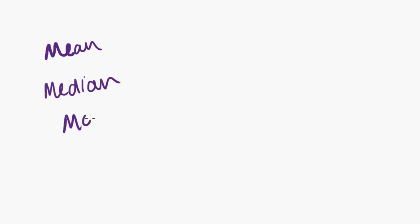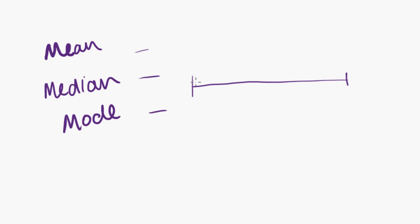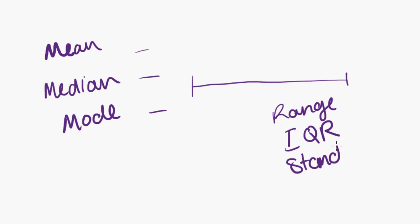Those last three summary statistics — the mean, the median, and the mode — are measures of centre. They're looking at where roughly the centre of the data is, measuring some midpoint that we can measure either side from. Now let's have a look at some of the measures of spread, which are different in that they look at how far the data ranges from one end to the other — how spread out it is. These include range, interquartile range or IQR, standard deviation, and variance.